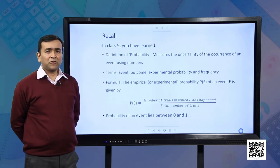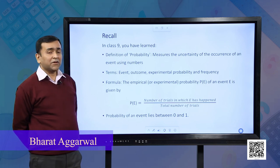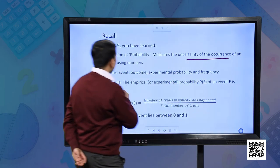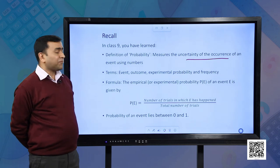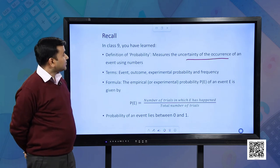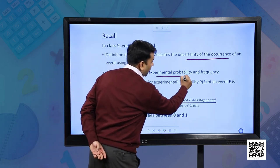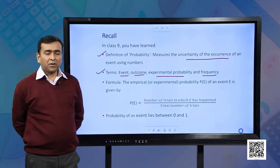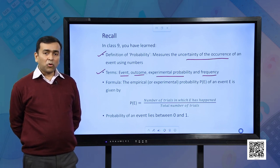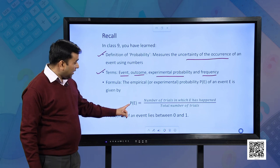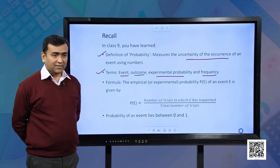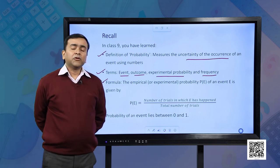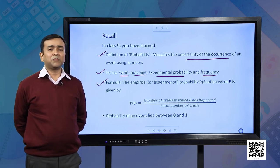But before that, let us recall what we have learned in class 9. We have learnt the definition of probability — that it measures the uncertainty of an occurrence of an event using numbers. We also learnt some terms associated with probability such as event, outcome, experimental probability and frequency. To find the probability of any event, the formula is P(E) equal to the number of trials in which the event E has happened divided by the total number of trials. Lastly, probability of any event lies between 0 and 1.